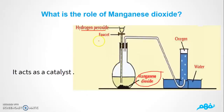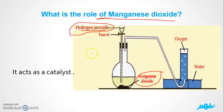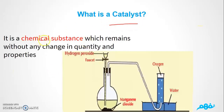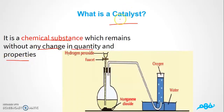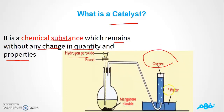Now we're going to talk about something very important: what is the role of magnesium dioxide? Magnesium dioxide acts as a catalyst. A catalyst is a chemical substance which remains without any change in quantity or properties. The magnesium dioxide in this experiment stays the same in quantity and properties, but it helps hydrogen peroxide decompose into oxygen and water.